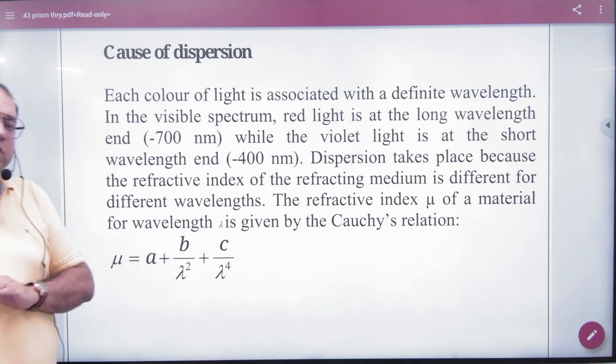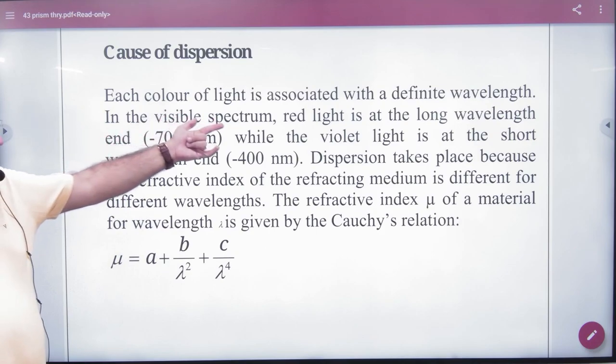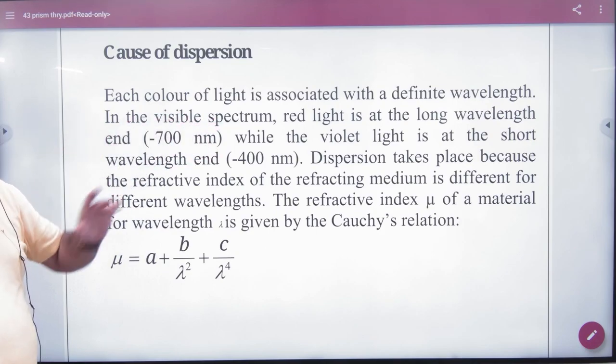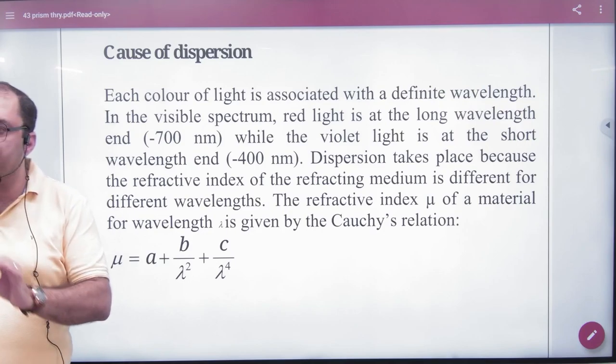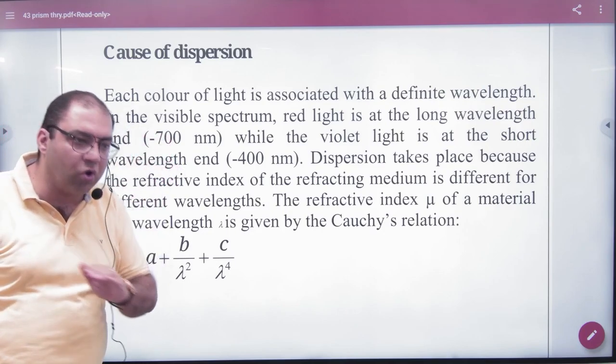The extreme colors are one violet and one red. So let's note that red light is at the longest wavelength. Red light is the most important wavelength of red light and the violet is the most short and small.